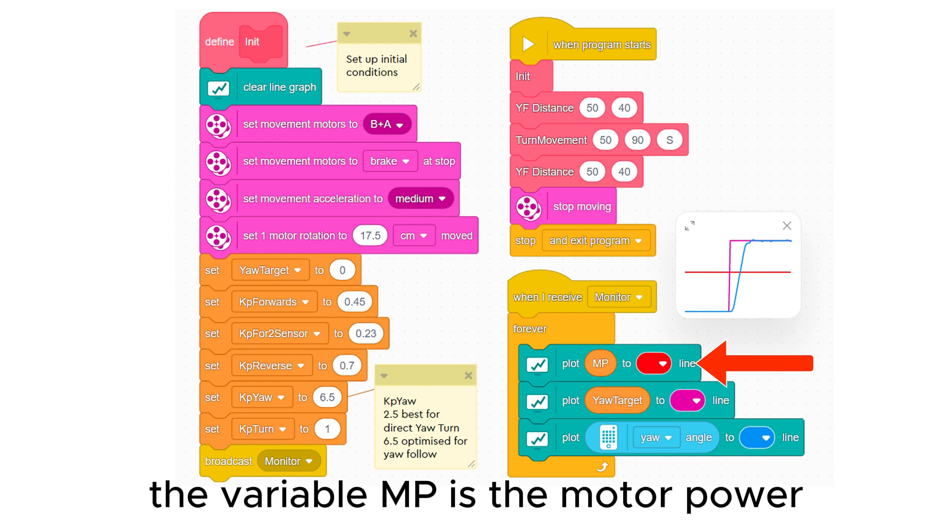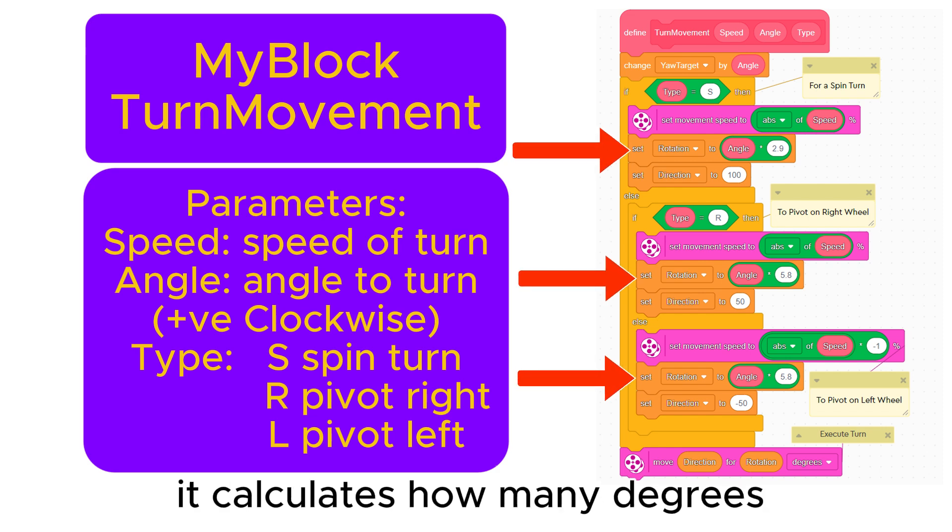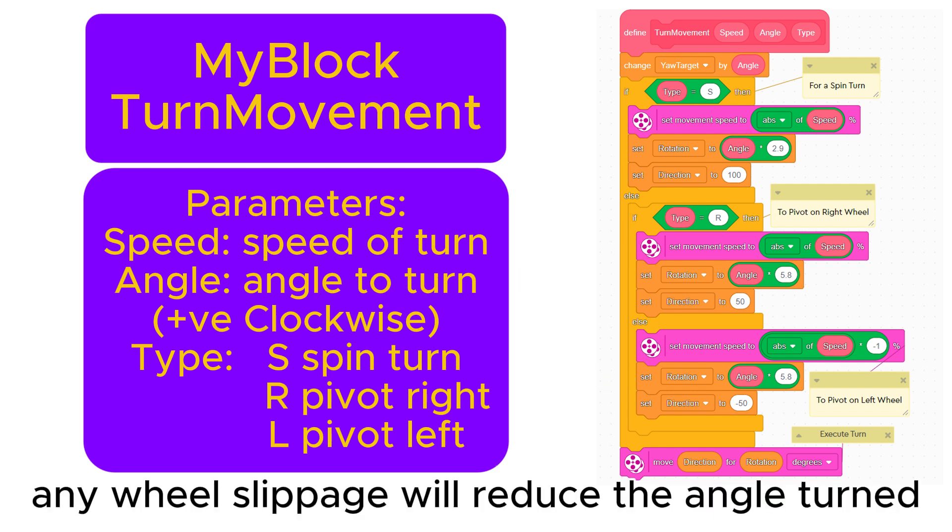The variable MP is the motor power. The turn movement my block doesn't use the yaw sensor. It calculates how many degrees the motors have to turn so that the robot turns by the required angle. Any wheel slippage will reduce the angle turned.